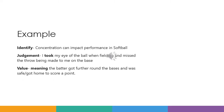Here is an example from concentration from yesterday, just to give you a recap. Identify would be: concentration can impact performance in softball. The judgement would be: I took my eye off the ball when fielding and missed the throw being made to me on the base. The value of that is: meaning the batter got further around the bases and was safe, got home, or got home to score a point. All in the post tense and broken down into I, J, and V.